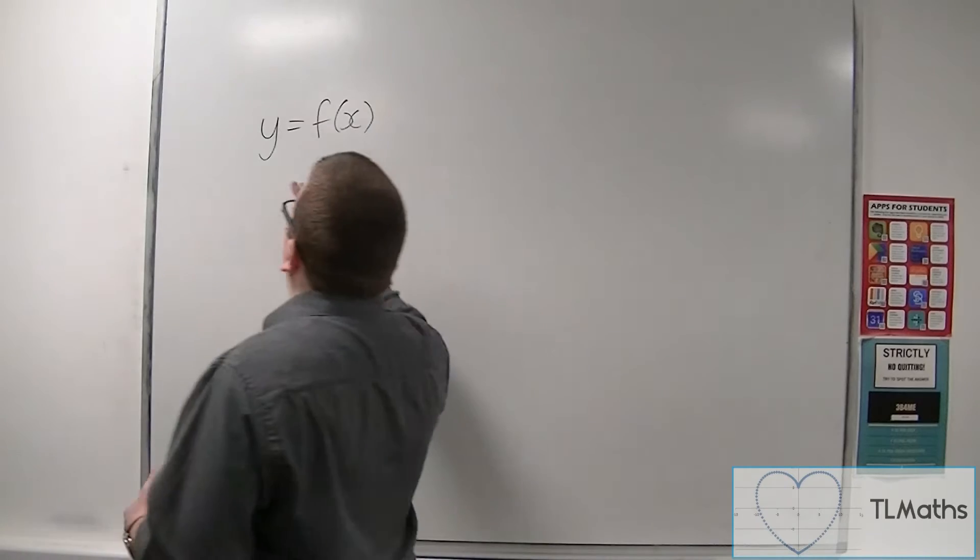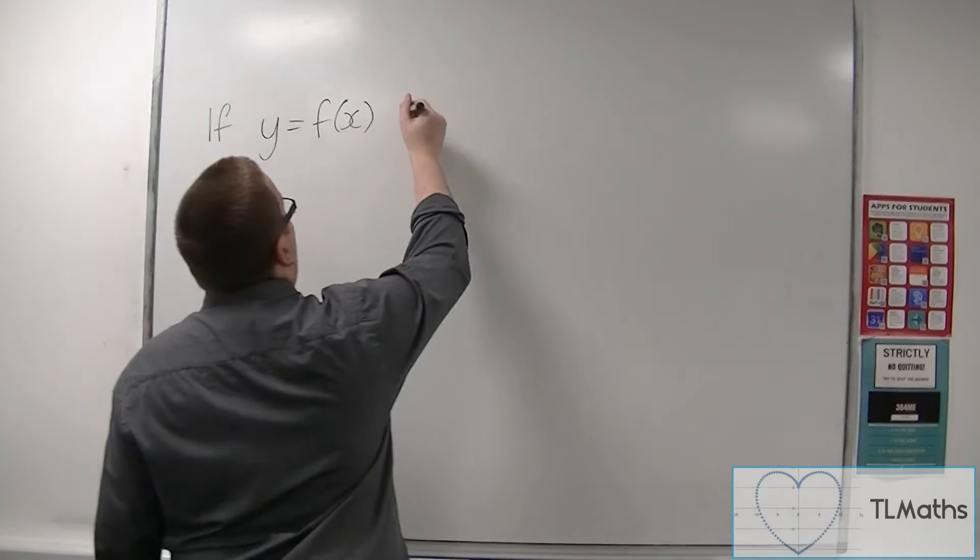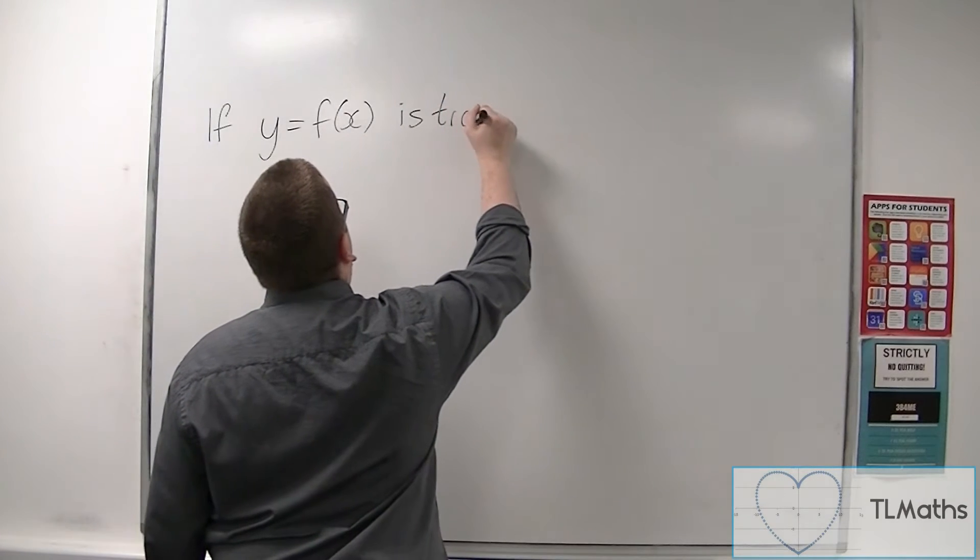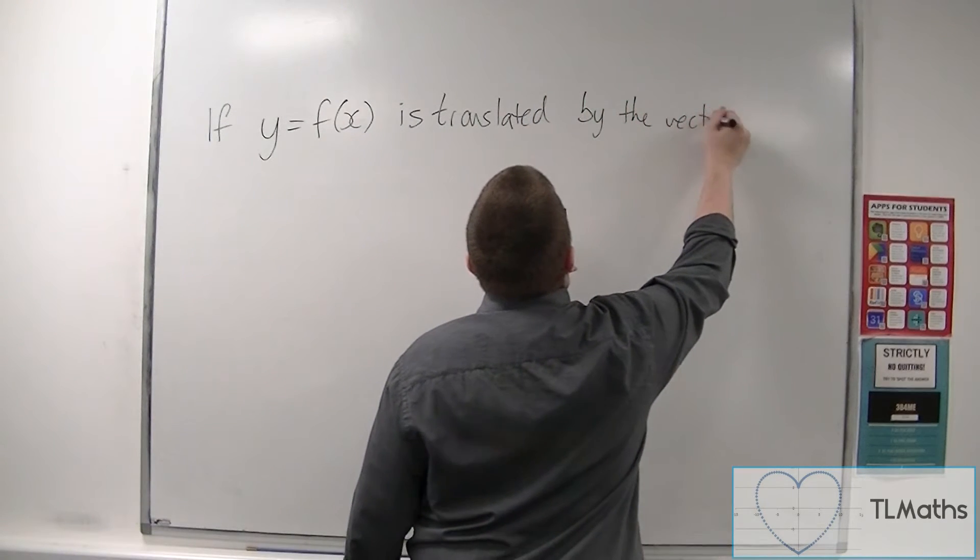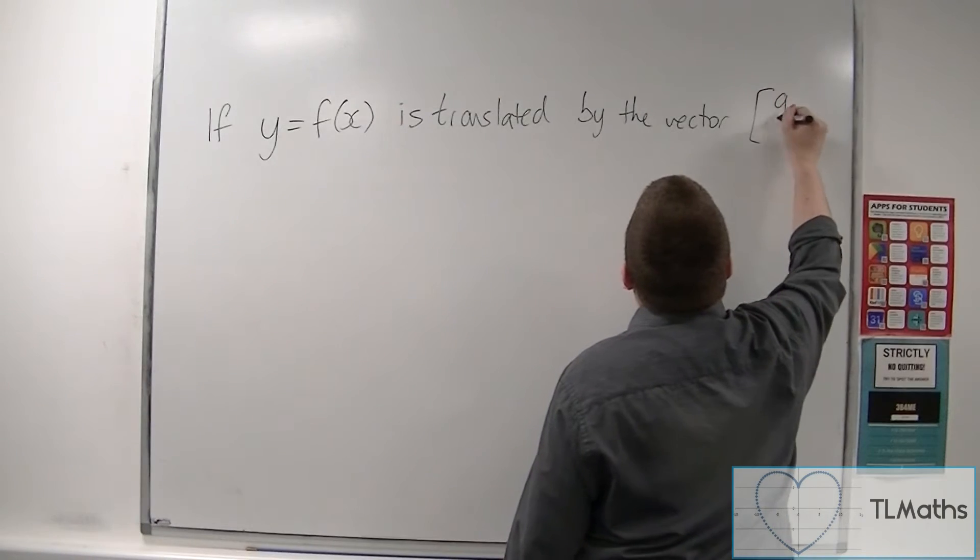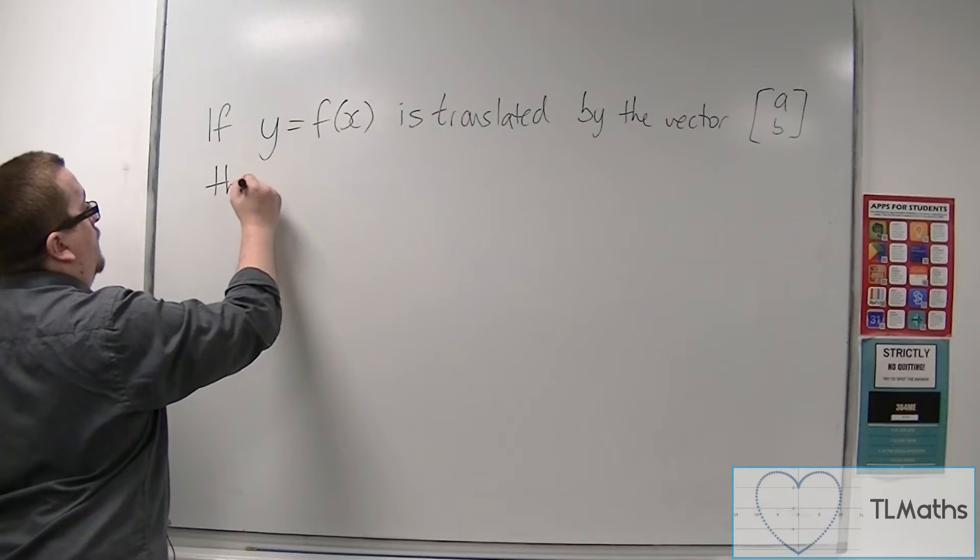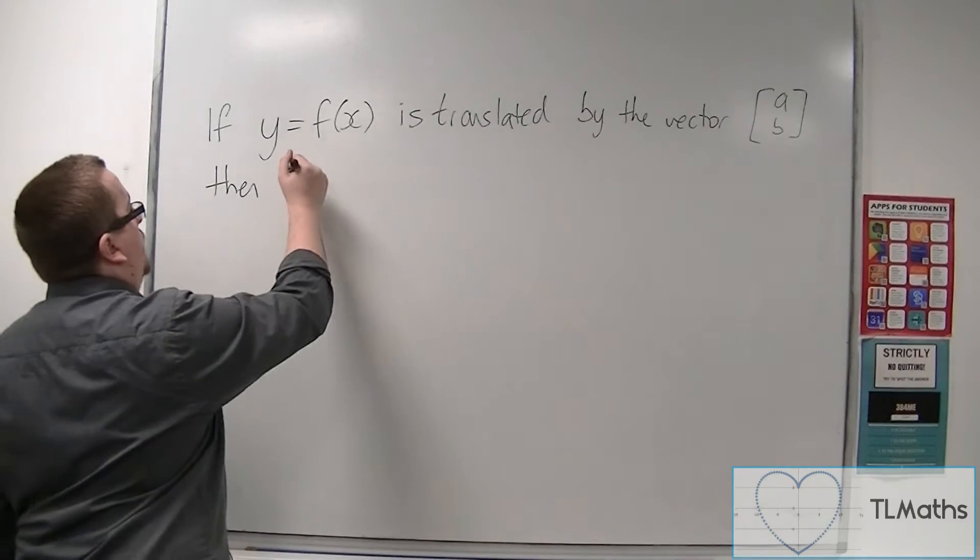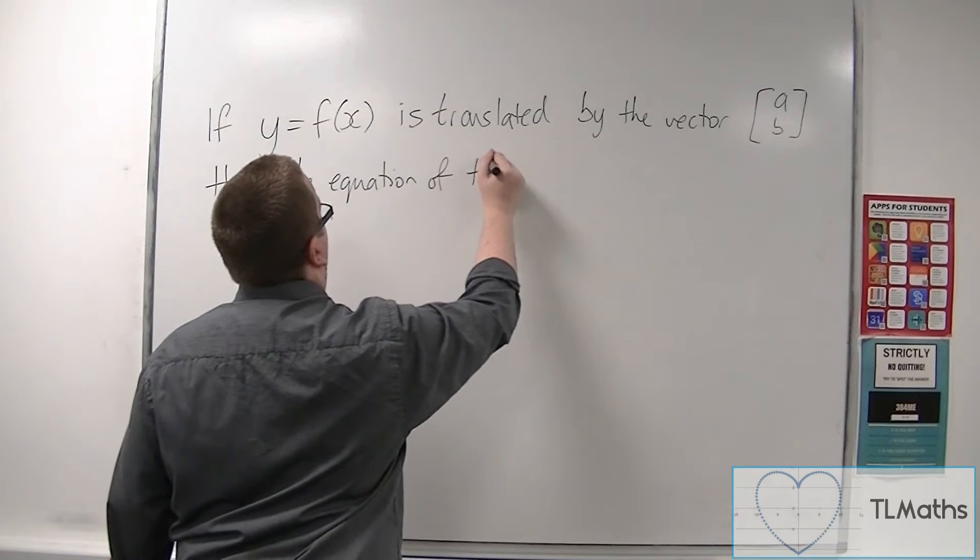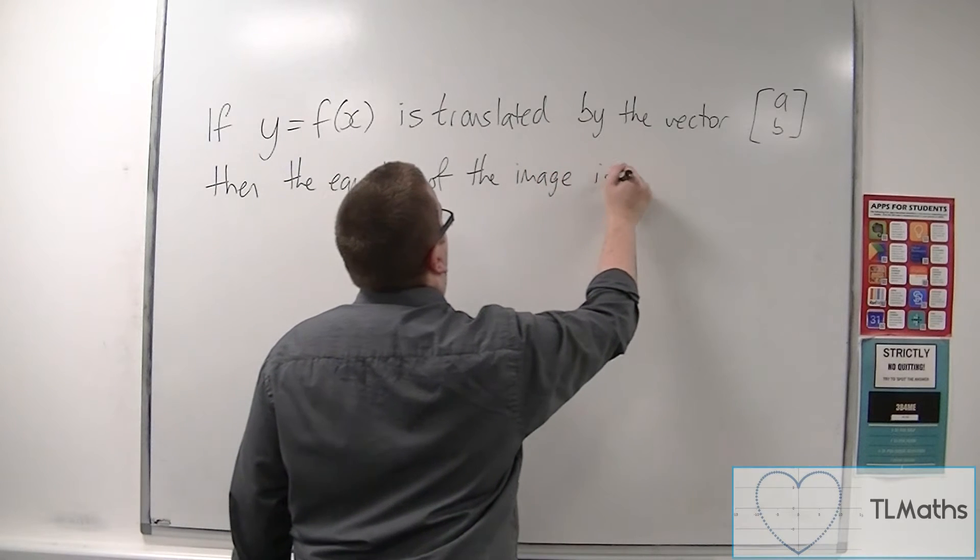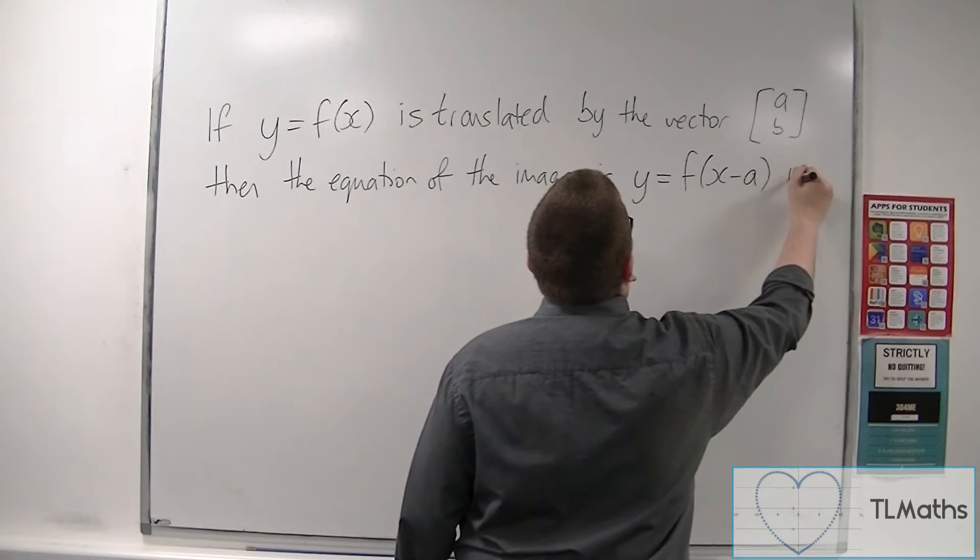So y equals f of x—if y equals f of x is translated by a particular vector, by the vector (a, b) for example, then the equation of the image is y equals f of x minus a plus b.